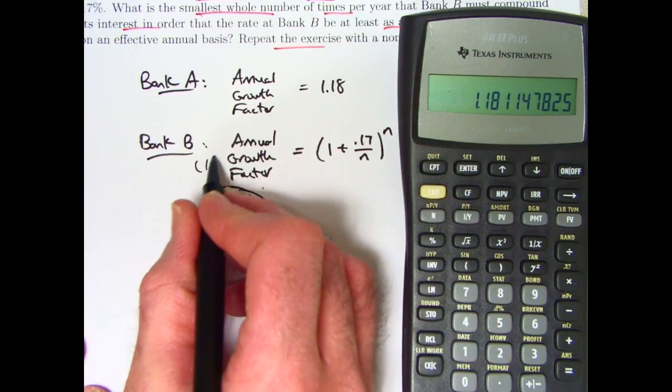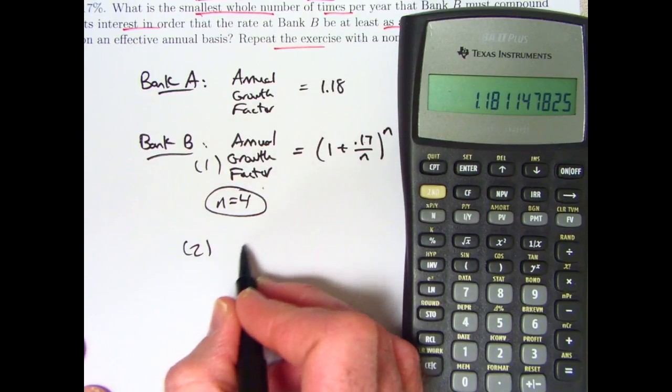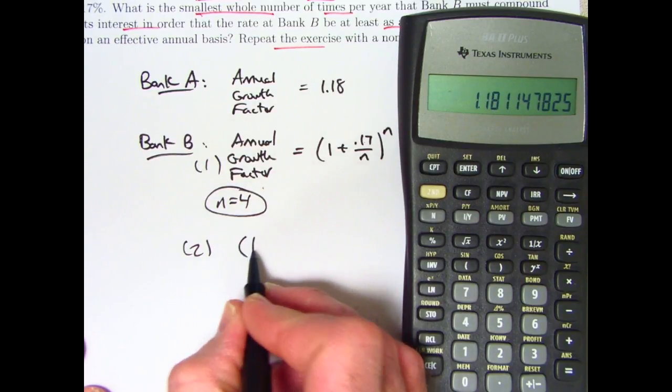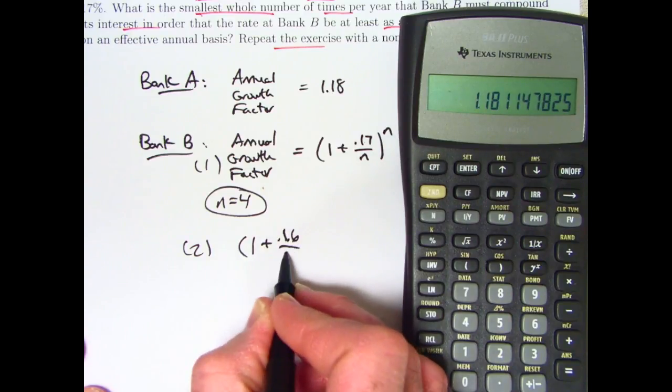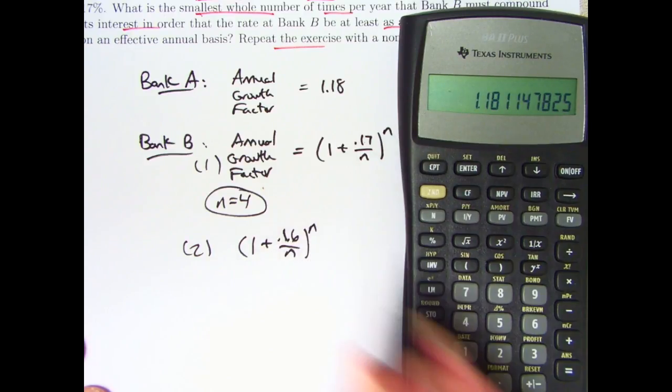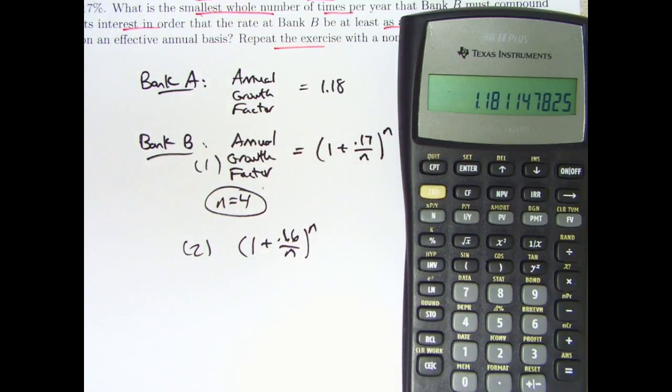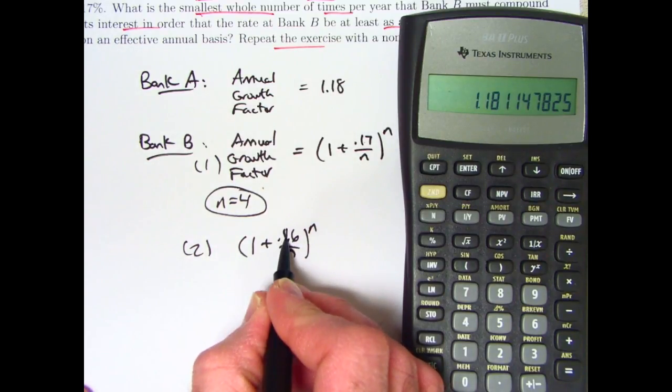But, so that's the first case here. What about the second case where the interest rate is 0.16? This is a little bit more interesting, and we'll see why here. You could try N equals 2, 3, 4 again, and it's still not going to be big enough.